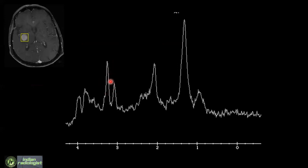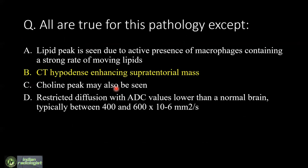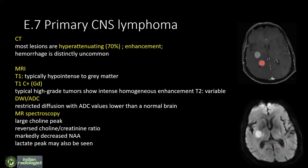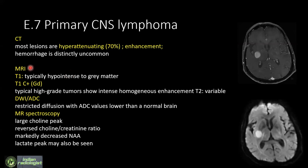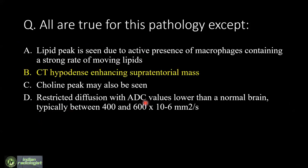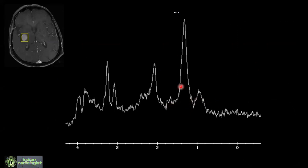These features are suggestive of hypercellularity — densely packed cells — consistent with lymphoma. Anything densely cellular will appear hyperdense on CT, not hypodense; therefore the 'CT hypodense' option is the answer. In primary CNS lymphomas, you have T1 hypointense lesions with restricted diffusion, MR spectroscopy shows choline peak, and because of macrophages you also have a lipid-lactate doublet peak — the 'twin peak sign' seen with lymphoma.